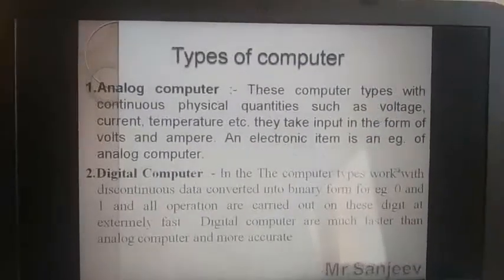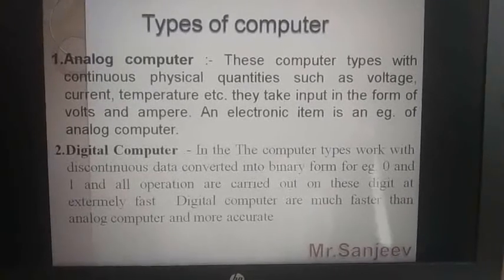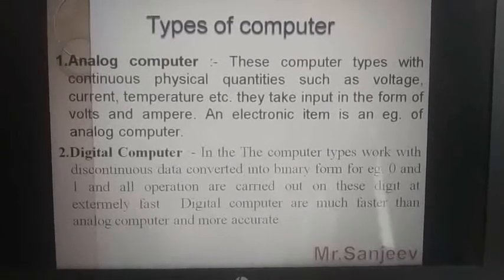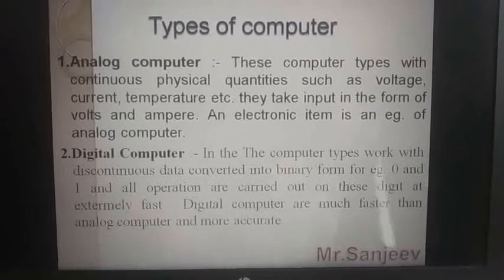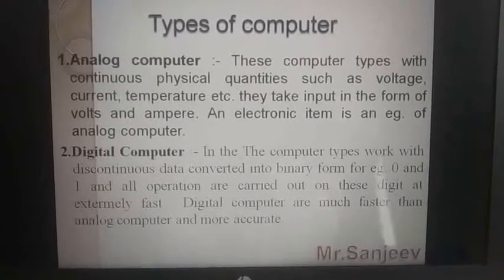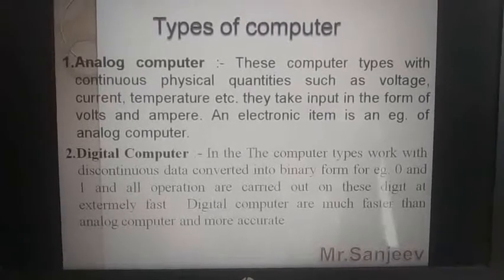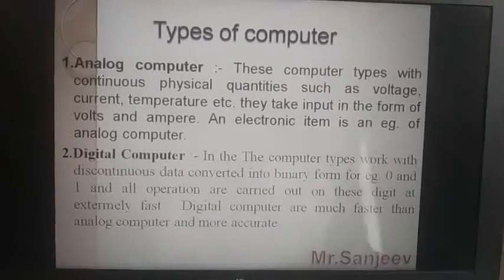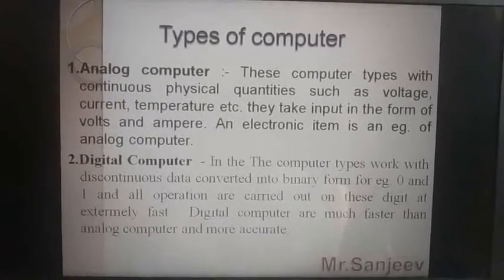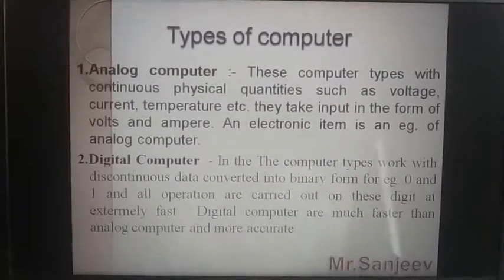Next topic: types of computer. First, analog computer. These computers work with continuously varying physical quantities such as voltage, current, temperature, etc. They take input in the form of volts and amperes. An electronic stabilizer is an example of an analog computer. Analog computer وہ ہوتا ہے جس کا use ہم کسی بھی current، temperature یا voltage کو control کرنے کے لیے کرتے ہیں — اسے ہم analog computer کہتے ہیں۔